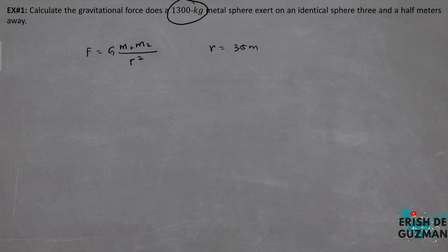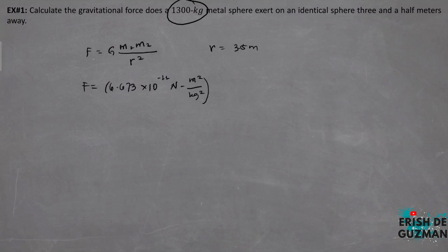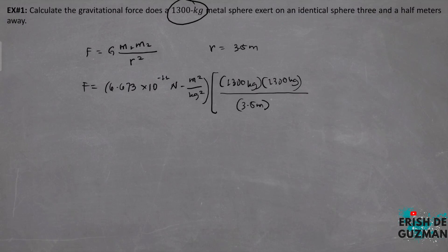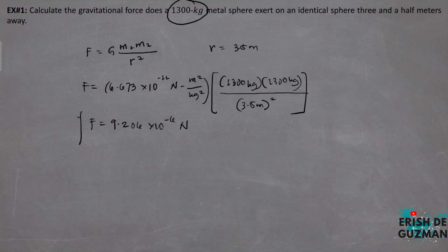Substituting the values: G is 6.673 times 10 raised to negative 11, M1 is 1,300 kg, M2 is 1,300 kg, and r squared is 3.5 meters squared. By calculating, the gravitational force is equal to 9.206 times 10 raised to negative 6 newtons. This is less than the force that would result from blowing gently on one of the spheres. Gravitational forces are usually significant only when at least one of the bodies has a very large mass.